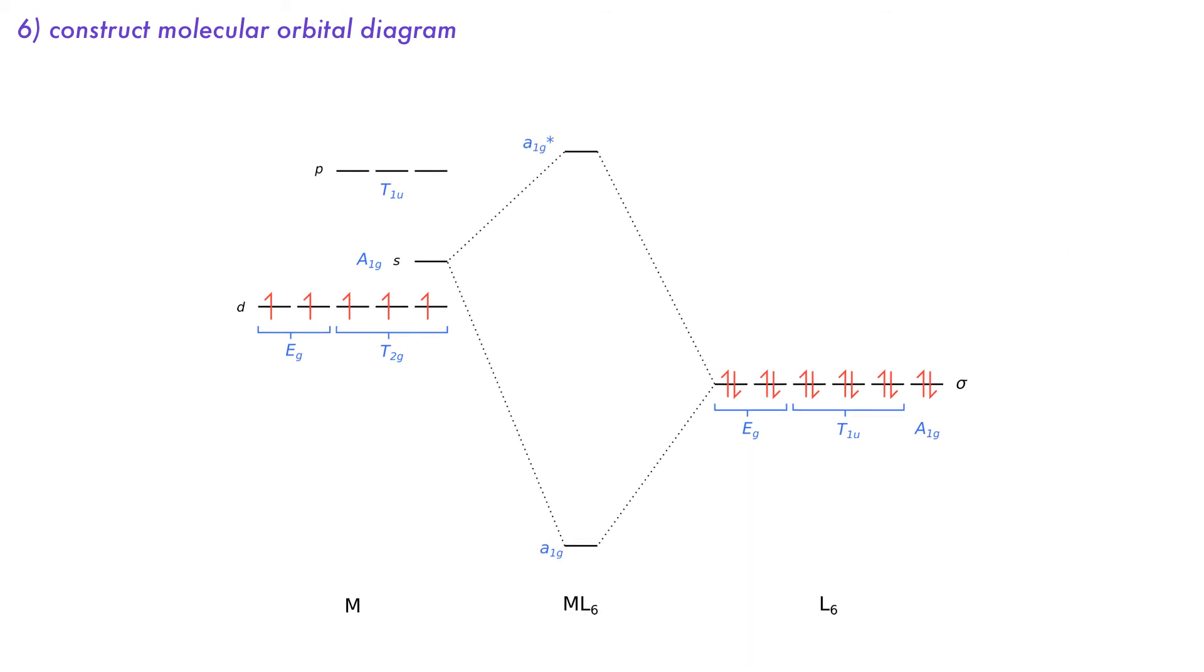The metal s orbital and the ligand a1g combine to give a strong sigma bonding and antibonding interaction. The metal p orbitals, the t1u set, give us medium strength bonding and antibonding orbitals. The final bonding and antibonding set is the eg set. And then finally the t2g orbitals are non-bonding.